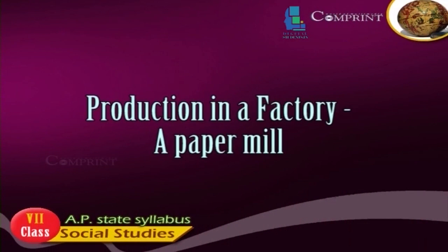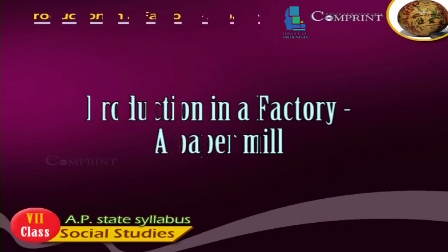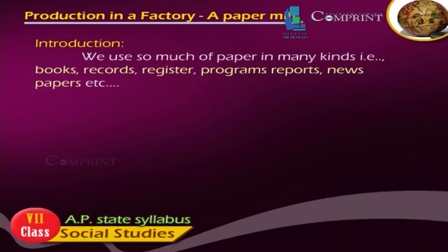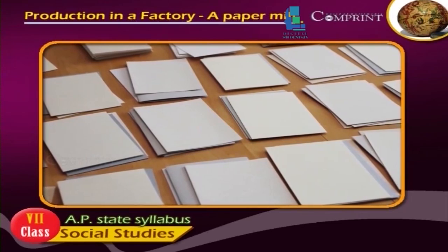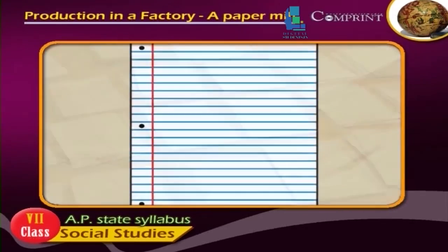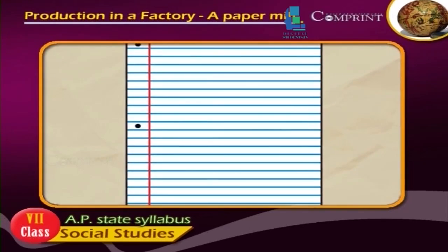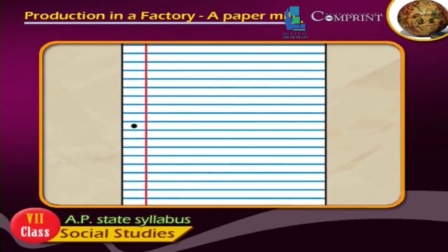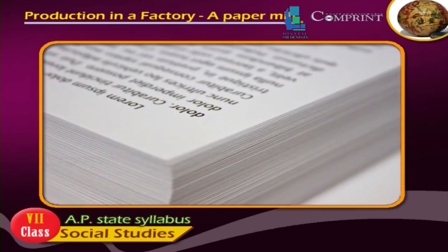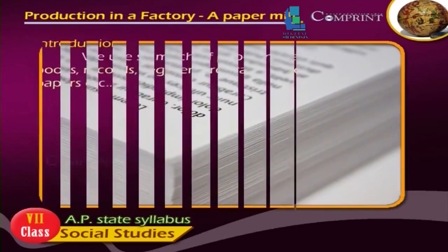Production in a factory — a paper mill. Introduction: We use so much paper in many kinds, i.e., books, records, registers, program reports, newspapers, etc.